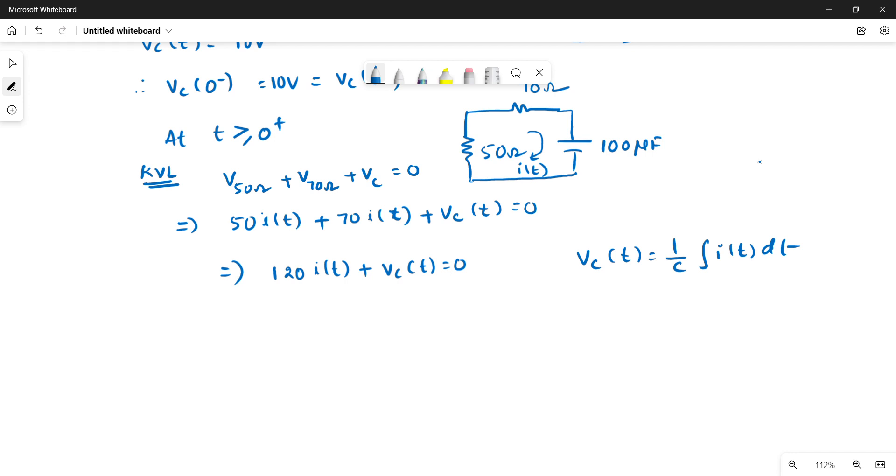The actual voltage across the capacitor formula is 1 by c integral i of t dt. So applying differentiation on both sides, dVc of t by dt is equal to 1 by c times the differential of integral of any function, which is the function itself, so i of t.